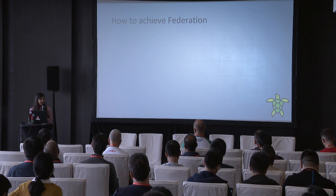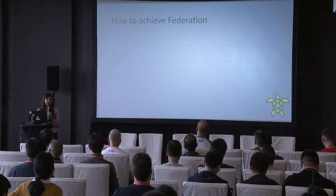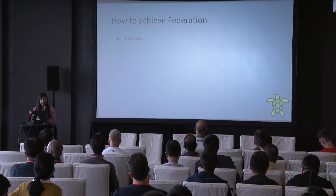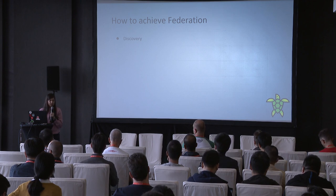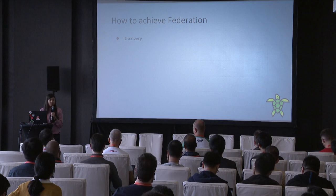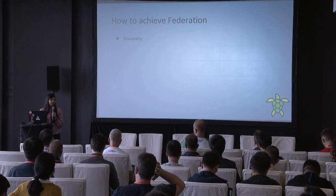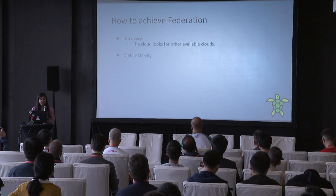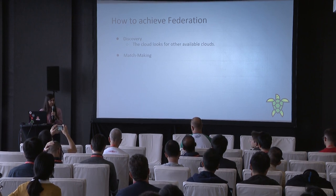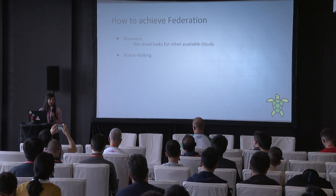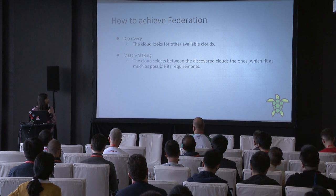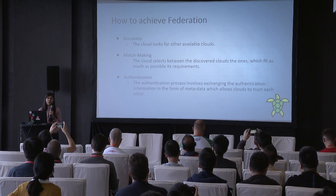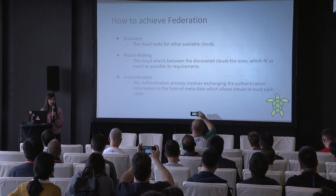How can we achieve federation? We'll discuss the three-phase model that a federated environment follows. First is discovery — several discovery mechanisms or algorithms are used to fetch all clouds ready to provide their services. Second is matchmaking — this involves finding the foreign cloud whose requirements match in both available resources and supported authentication mechanisms. Third is authentication — the authentication process involves exchanging metadata so that clouds can trust each other.